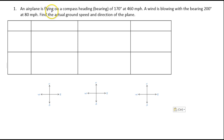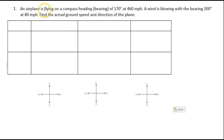An airplane is flying on a compass heading or bearing of 170 degrees at 460 miles per hour. A wind is blowing with the bearing 200 degrees at 80 miles per hour. Find the actual ground speed and direction of the plane. That ground speed and direction will be the resultant of two vectors: the plane velocity and the wind velocity. In the third column we will record the resultant.